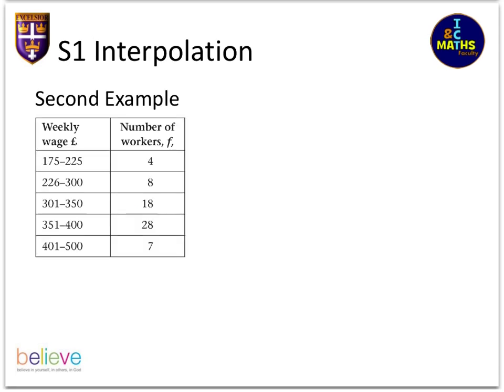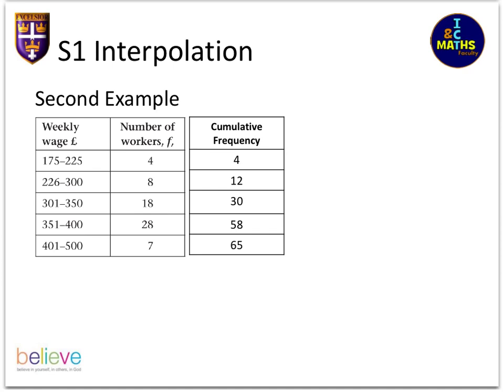I've got a second example here, and you can see this is a slightly different type of data. This is actually discrete data, but it's been grouped, so we still have to treat it as continuous. Because I'm going to try and find a median value, I've just worked out cumulative frequency here, and I'll pop that next to it.